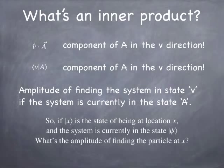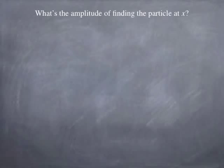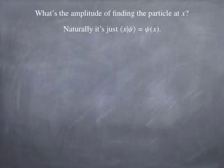Suppose we let the ket x represent the state of being at a location x on the x-axis, and the system is currently in the state psi, some arbitrary quantum state. What's the amplitude of finding the particle at x? In Dirac notation, you'd write it as the bra x acting on the ket psi. The amplitude of finding the particle at location x, given that it's in the state psi, is nothing other than the wave function — that's what the wave function means. It tells you the amplitude of being at different locations. So the Dirac notation for the wave function is simply the bra x acting on the ket psi.